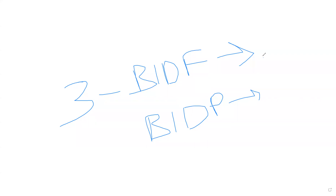BIDF is used when you don't want to pick at all — there is no quantity in the bin physically, though the system shows it as available. Use BIDF, and the system will zero out the task quantity and also zero out the delivery quantity in ECC and eWM. This means you don't intend to pick that quantity again.